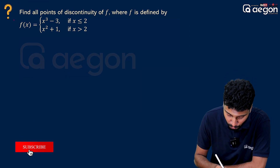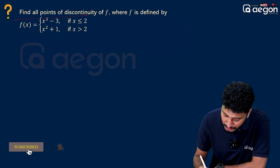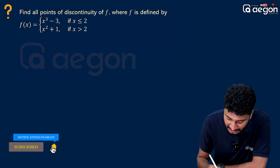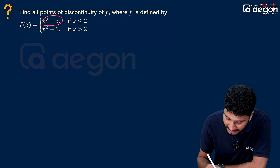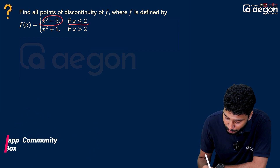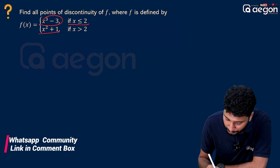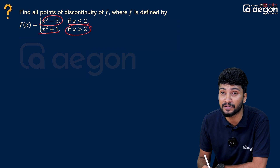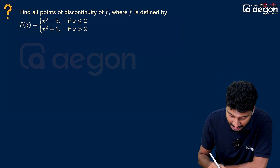Find all points of discontinuity of f, where f is defined as a piecewise function. If x equals x² plus 1 — and I defined a piecewise function on it. We will do three cases.